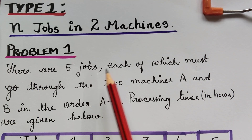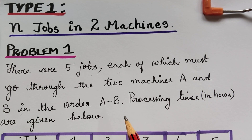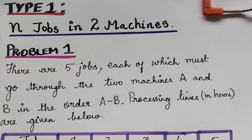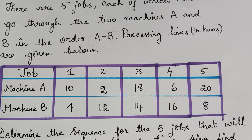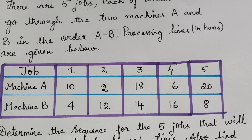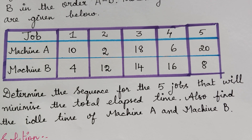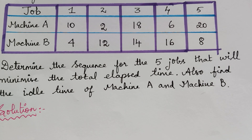So we are going to solve the first problem under this topic. The question is: there are five jobs, each of which must go through two machines A and B in the order A to B. So first we have to complete machine A and then we have to perform machine B. Processing times in hours are given. We have to determine the sequence for the five jobs that will minimize the total elapsed time.